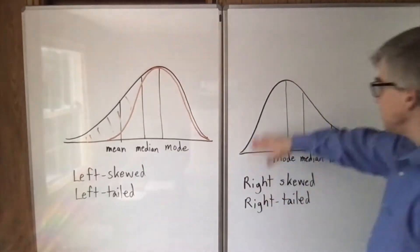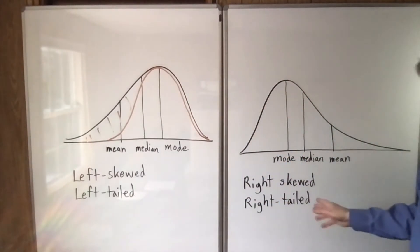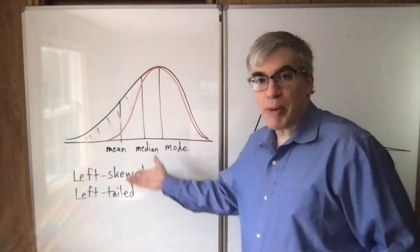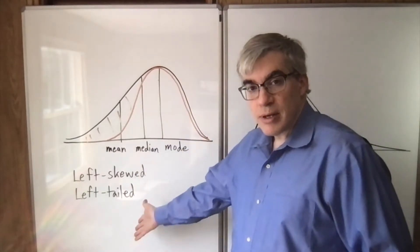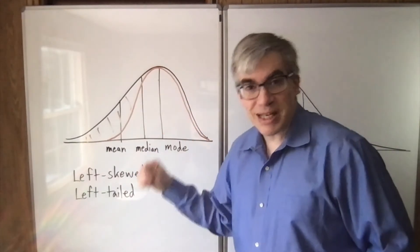Right skewed is exactly the same thing in the other order. So it's mode, then median, then mean, for right skewed has a long right tail. You might want to just remember one of them, like this one, and then just remember that the right skewed is the exact opposite.